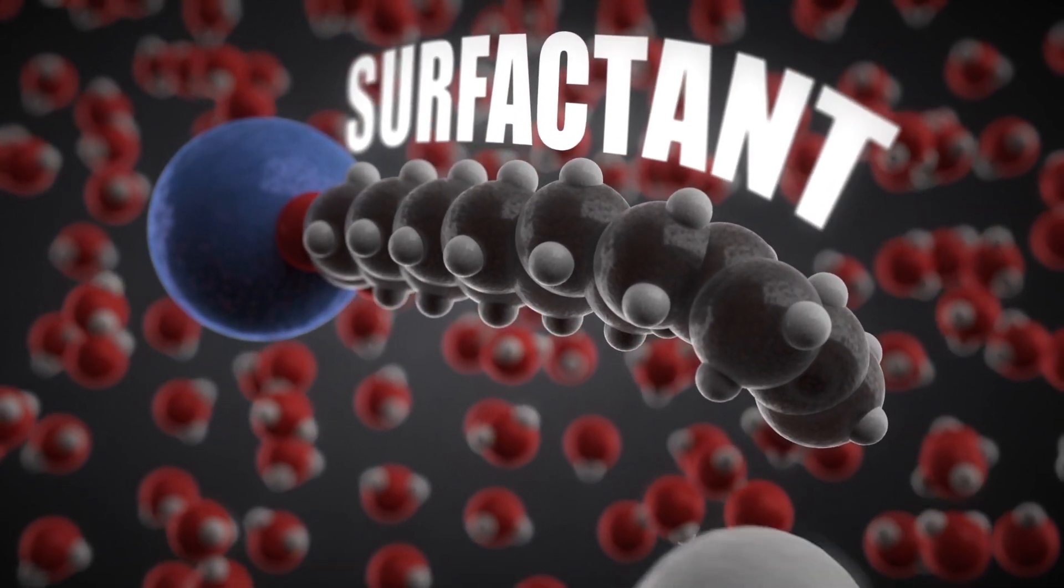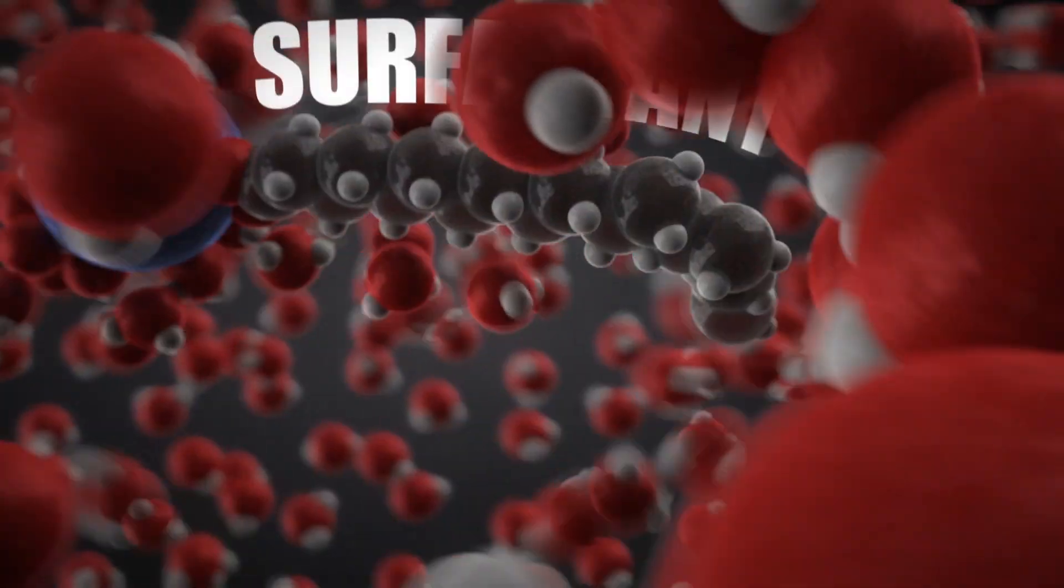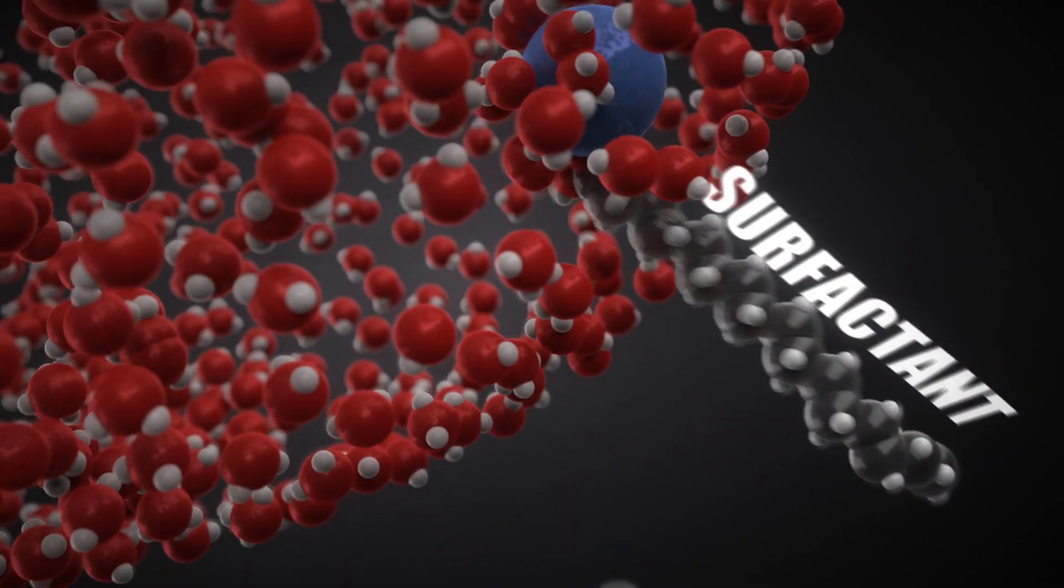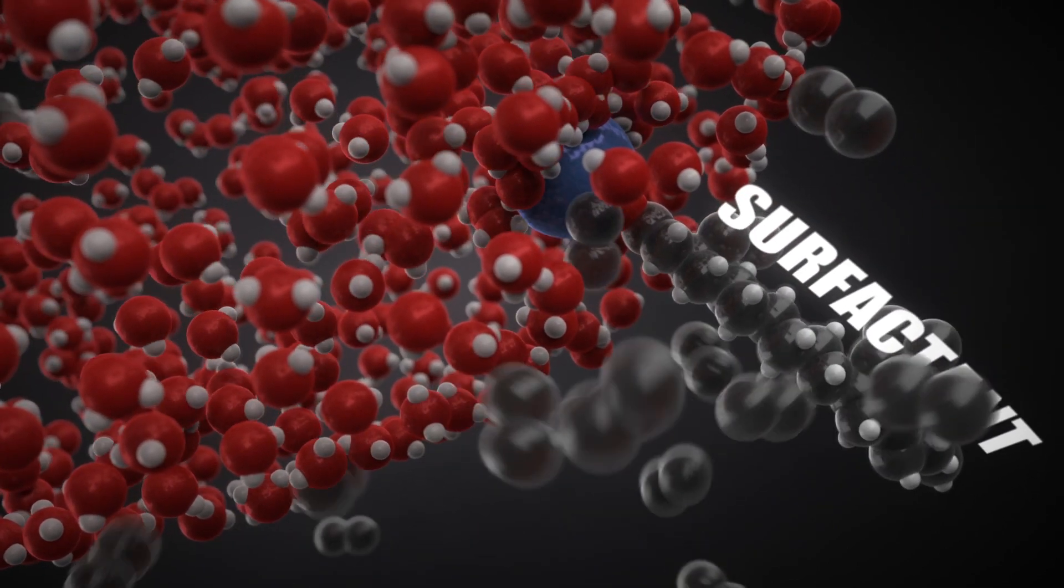Conversely, the tail attracts carbon and the head repels it, making the solution carbon-loving. This polar nature causes it to congregate on the surface of water, which helps create a bubble wall structure that makes up foam and increases the surface area.